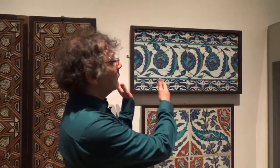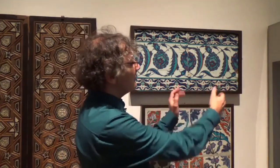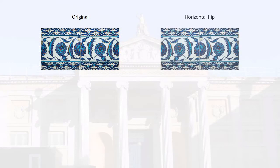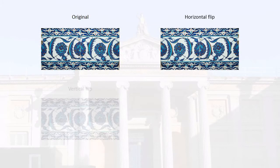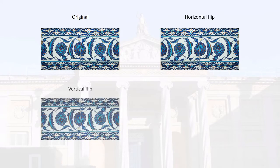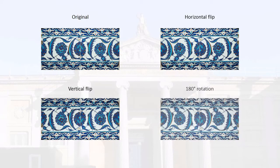Returning to the pair of Ottoman tiles, we notice that this pattern has fewer symmetries. Because of the way the flowers and leaves are arranged, it only has translational symmetry, but no other symmetries. If we reflect it or rotate it, we get different looking patterns, with the flowers pointing down rather than up, or right rather than left.